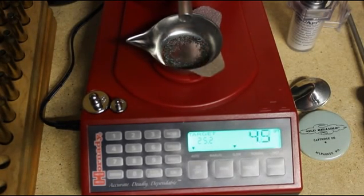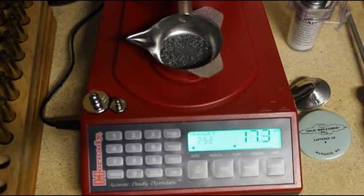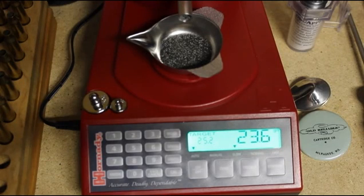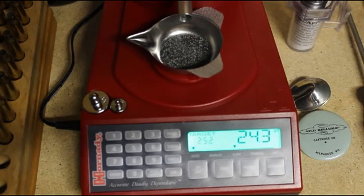Now watch, it'll get up to 23 or 24 grains, then slow down. You see, it's going slow now. You can hear it trickling slowly. 25.2 is the target.